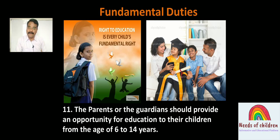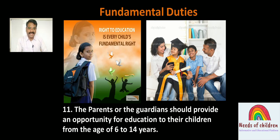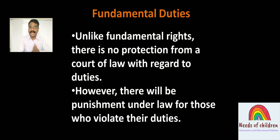Duty number eleven: parents or guardians should provide an opportunity for education to their children between the ages of 6 to 14 years. It is the duty of every parent and guardian to ensure their children receive education in this age group.